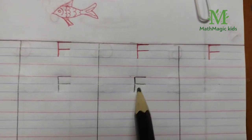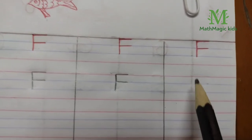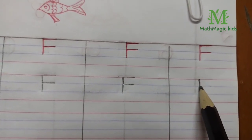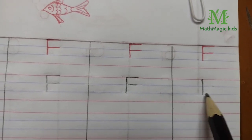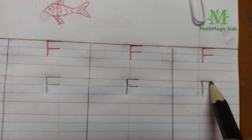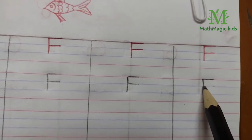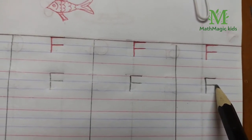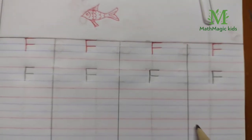Second blue line, first red line, we will draw a small sleeping line. First blue line, we will draw a sleeping line like this. So this is F.